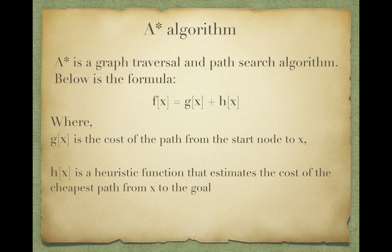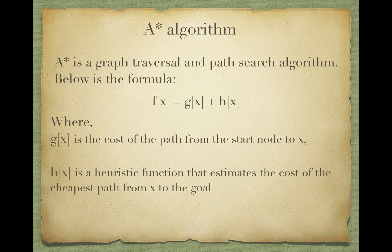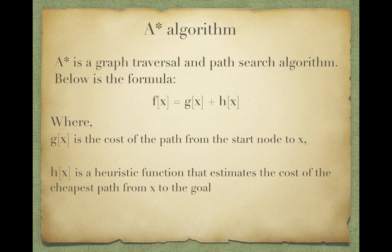Below is the formula: f(x) = g(x) + h(x). g(x) is the cost of the path from the starting node to x. h(x) is the heuristic function that estimates the cost of the cheapest path from x to the goal.